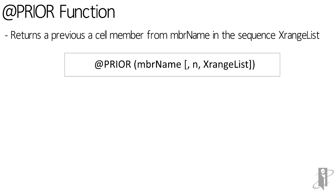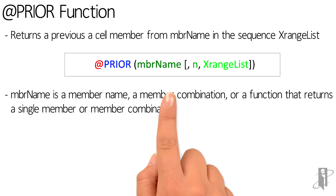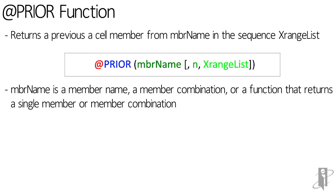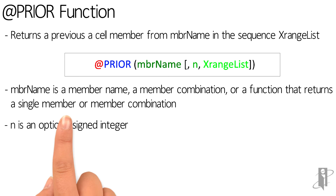There are three input parameters for the Prior function: member name, an optional numeric value, and an optional X range list. The member name parameter can be a valid single member name or member combination, or a function that returns a single member or member combination.